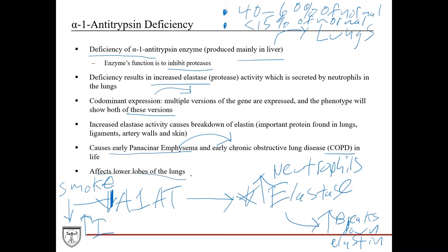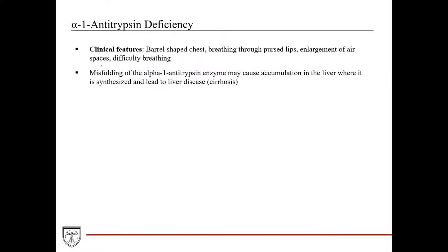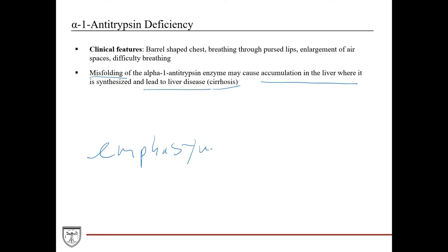Anatomically, the disease affects the lower lobes of the lung. One important point: as a result of the mutation in this protein, you have misfolding and accumulation in liver tissue where it's synthesized, which leads to liver disease or cirrhosis. So even though the enzyme is active in the lungs, because it accumulates in a misfolded form in the liver, patients can develop both emphysema and cirrhosis — and this combination is how you can recognize the disease on an exam.